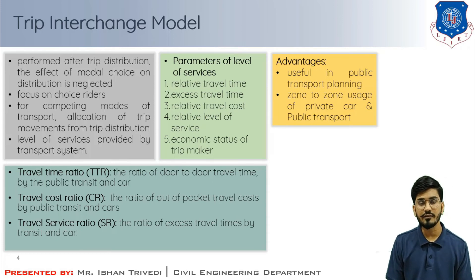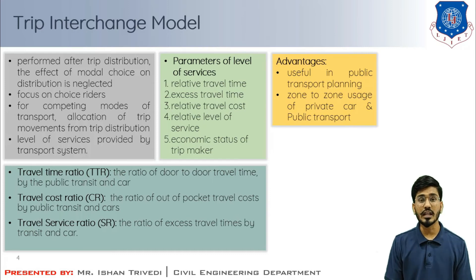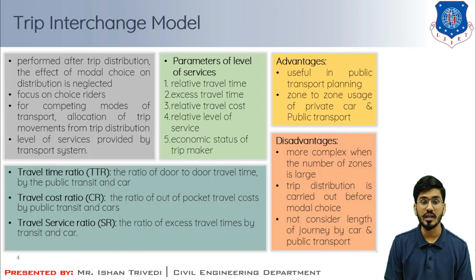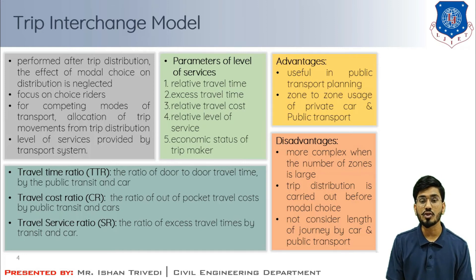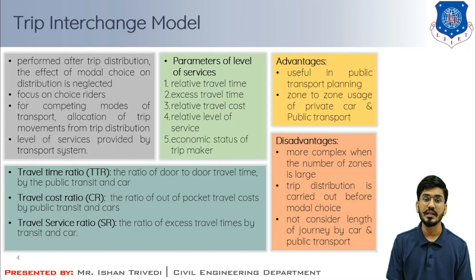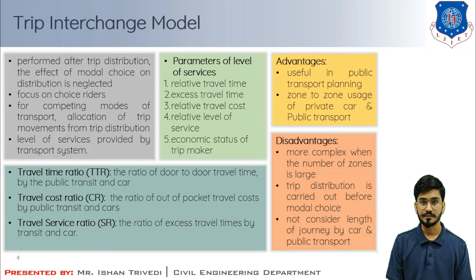This is how the study differs between the trip interchange model and the trip end models. Disadvantages of the trip interchange model: it is more complex, especially if the number of zones is larger. The total percent trip distribution is carried out just before any modal choice is considered, and it does not consider the length of journey by car and public transport.